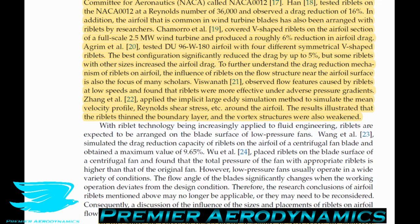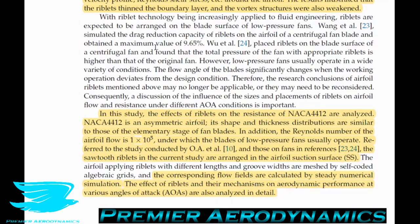Using large eddy simulation (LES) — the second-best Navier-Stokes CFD approach after DNS — researchers found that riblets thinned the boundary layer and weakened vortex structures. Thinning the boundary layer suppresses turbulent features by squashing vortical structures out of existence, promoting a more laminar boundary layer. In the current study, the effects of riblets on a NACA 4412 airfoil are analyzed.